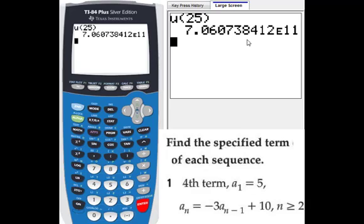It's more accurate than the table. That means 7.060738412 times 10 to the 11th power. That's u sub 250.